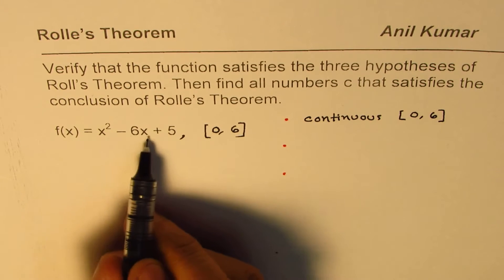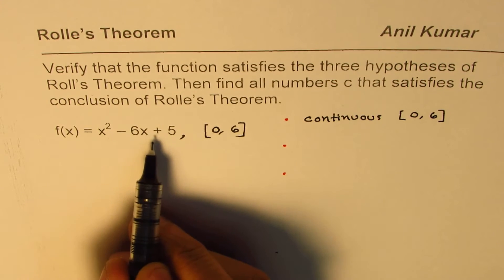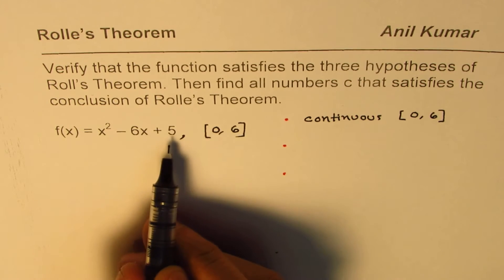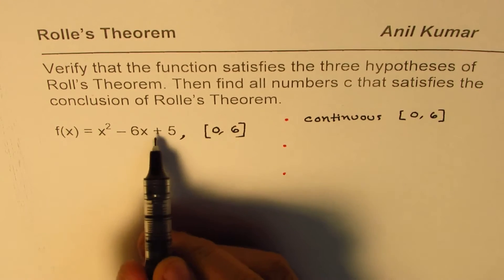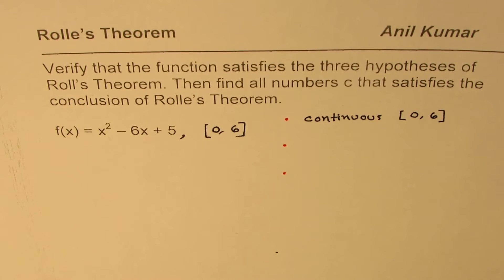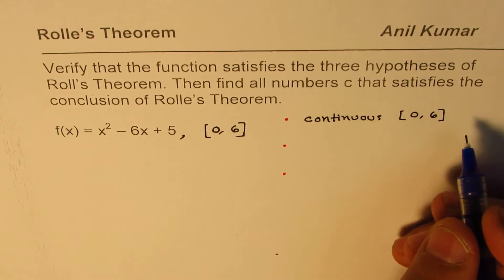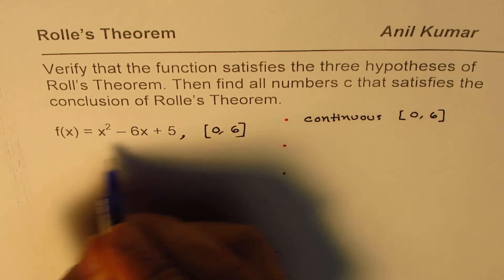Now, a parabola is actually continuous in entire domain, and therefore, it's a polynomial, and therefore, it is continuous in the given interval also. So, we have a polynomial. This is a polynomial.